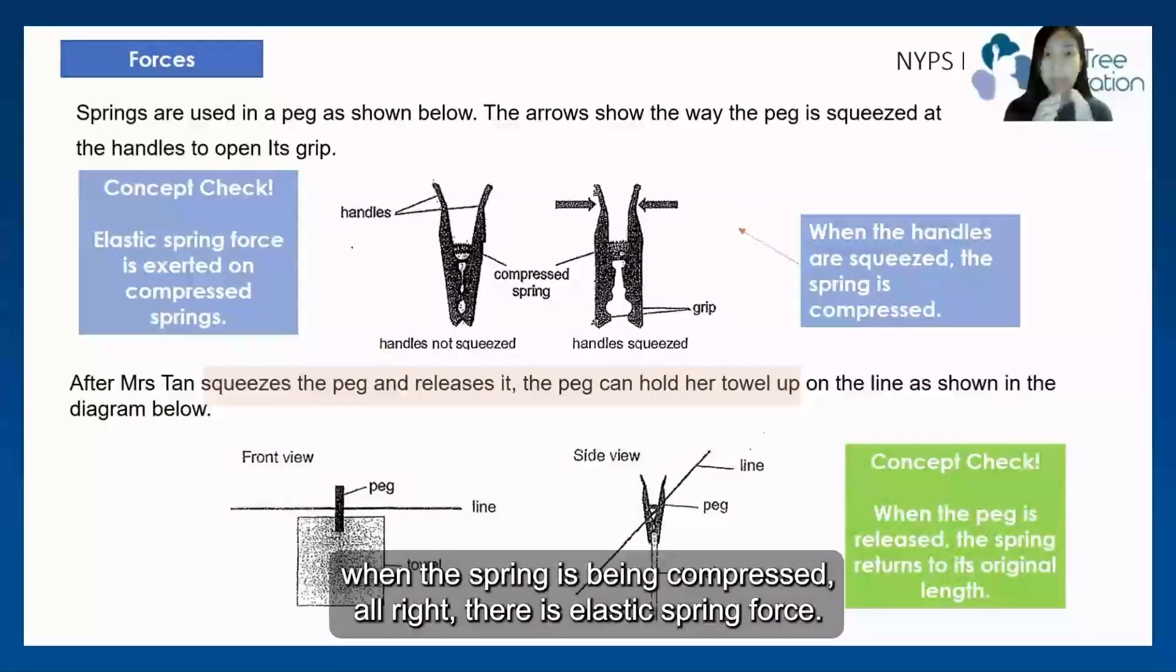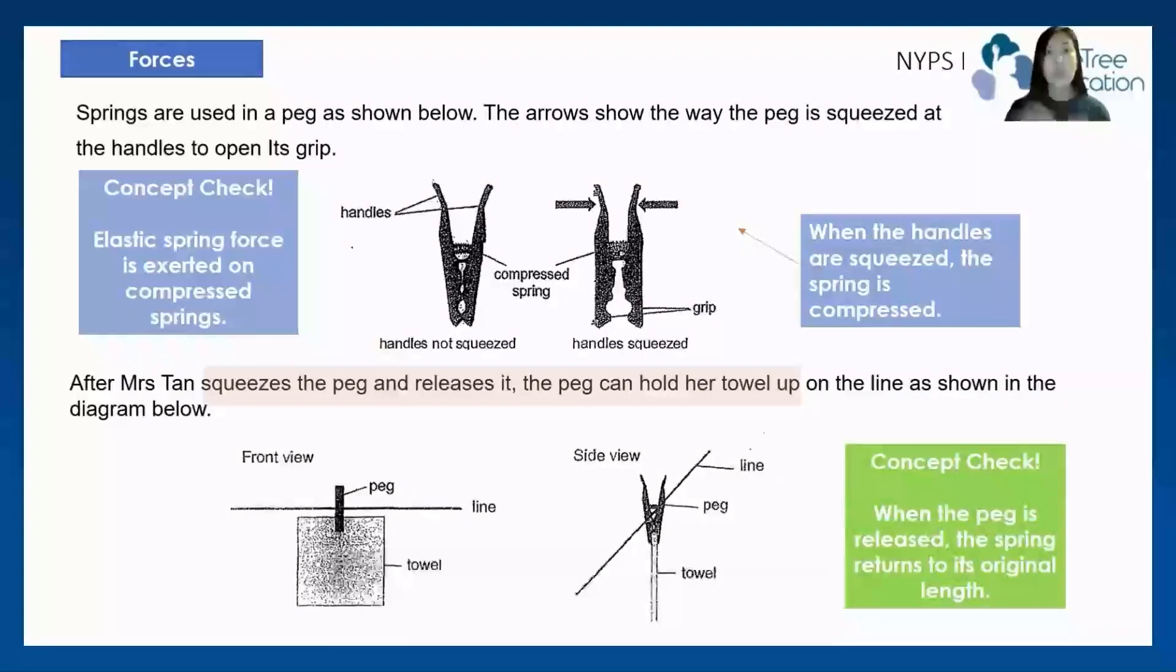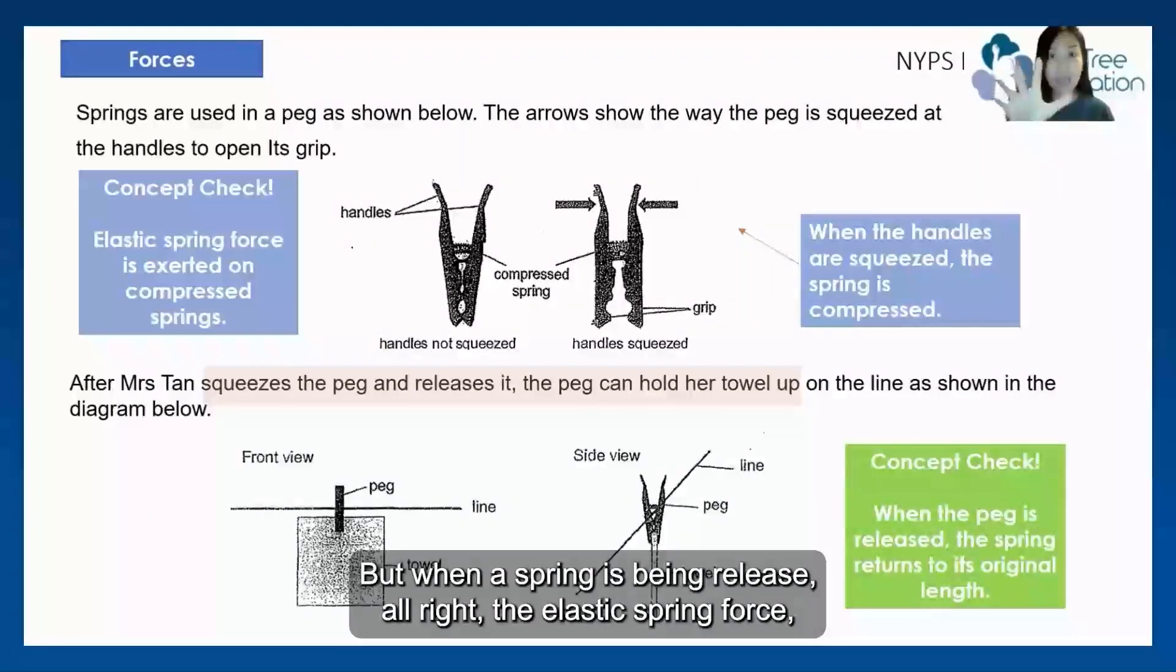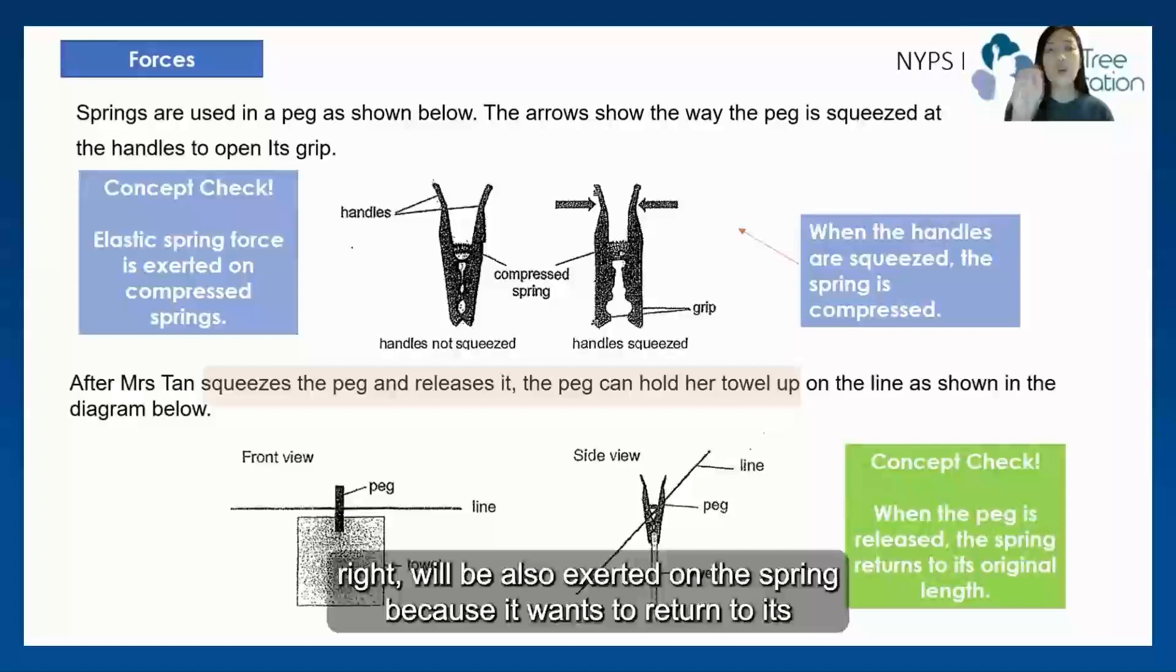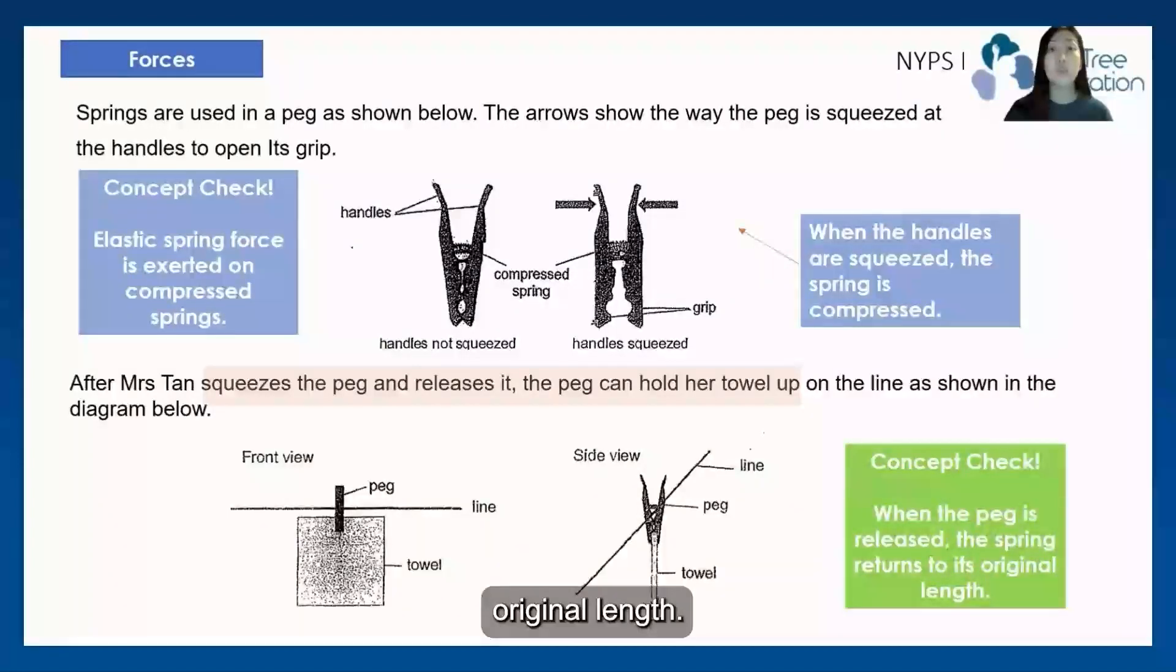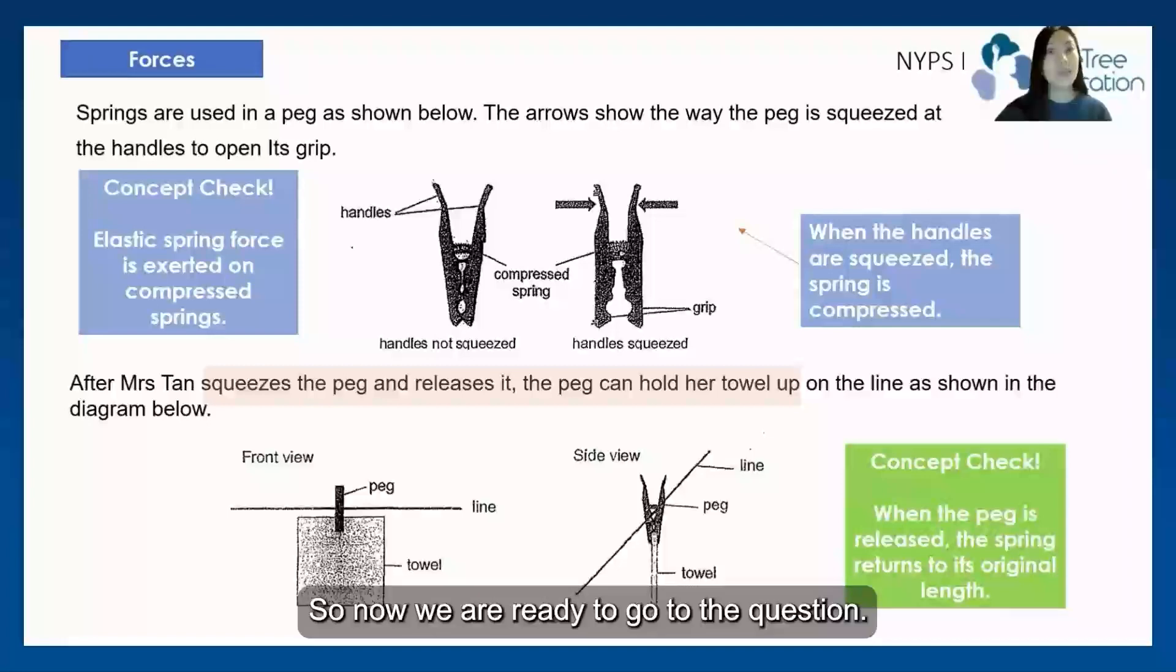When the spring is being compressed, there is elastic spring force. But when the spring is being released, the elastic spring force will be also exerted on the spring because it wants to return to its original length. So now we're ready to go to the question.